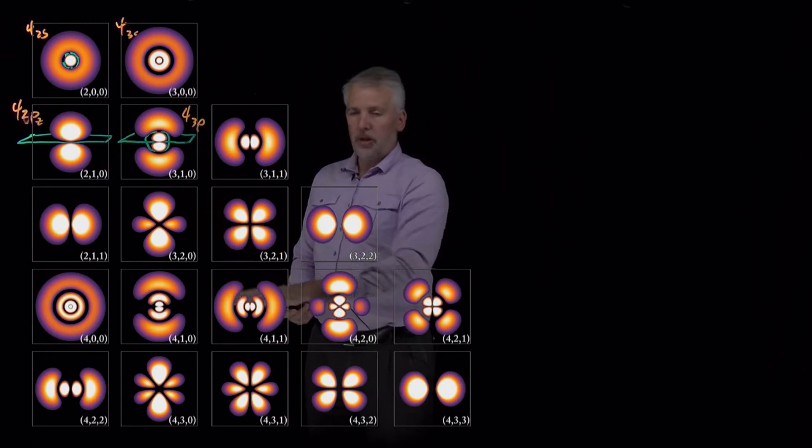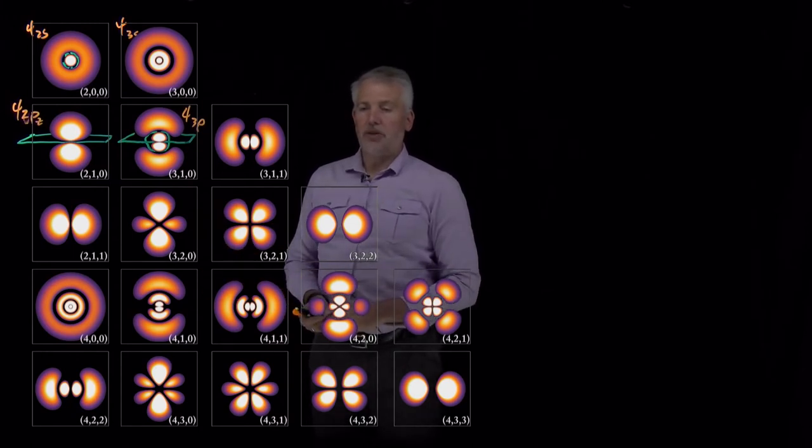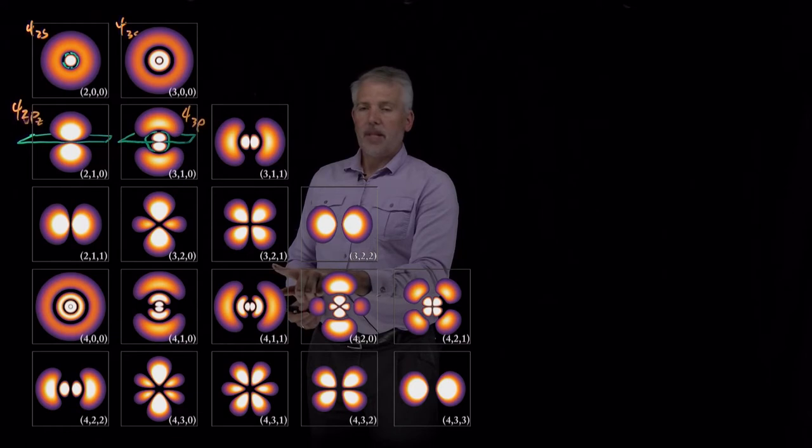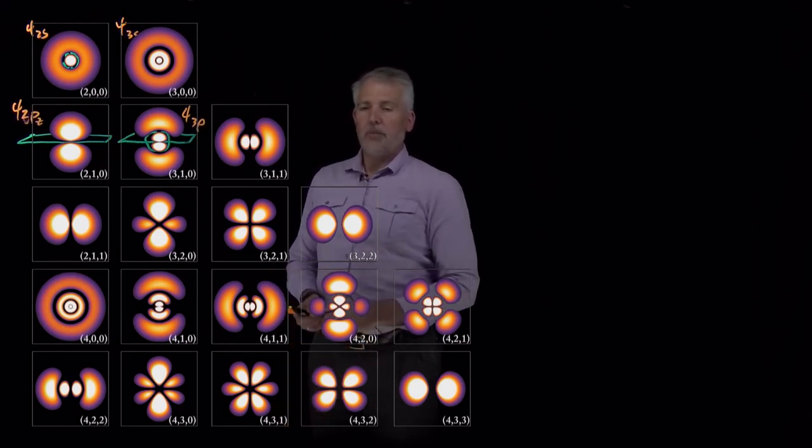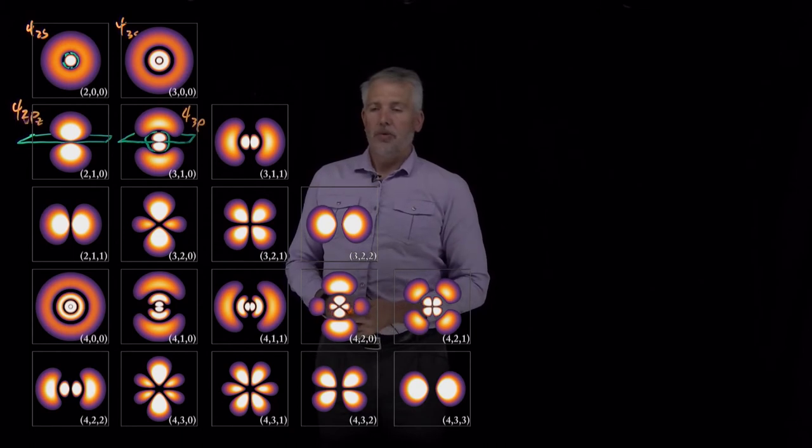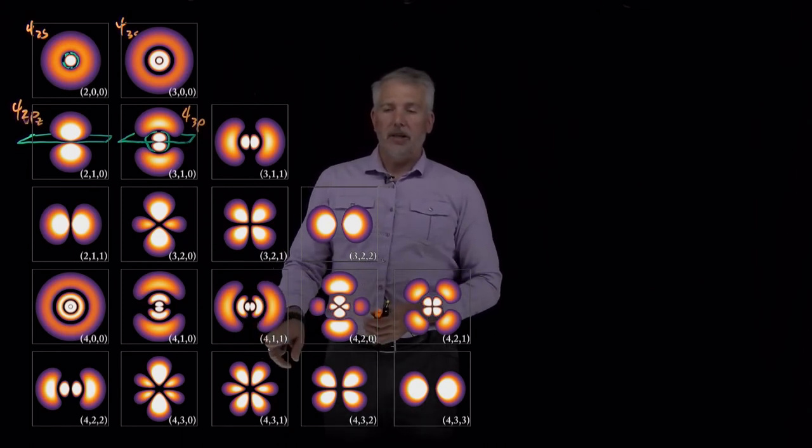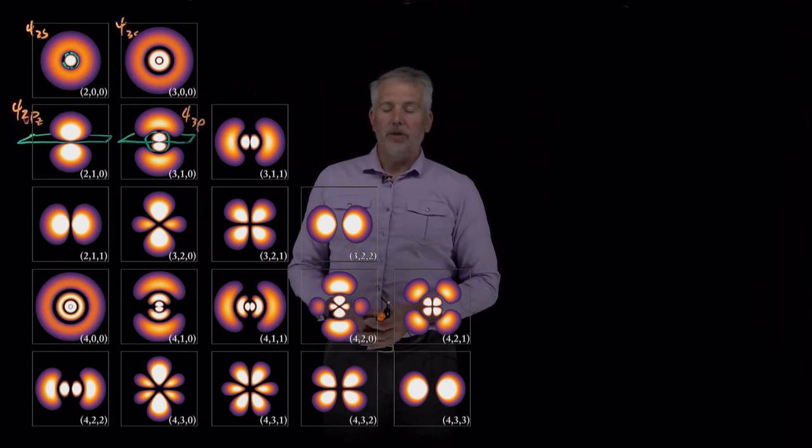So we won't illustrate all the rest of these, but as we move higher to d orbitals, for example, with an l value of 2, or even to f orbitals with an l value of 3, we get more and more angular nodes. When we move to higher n values, like this 4p orbital here, we collect more and more radial nodes.